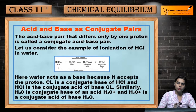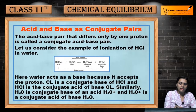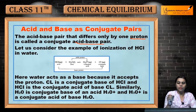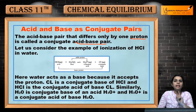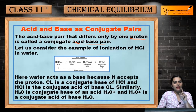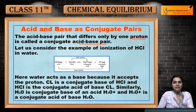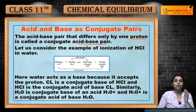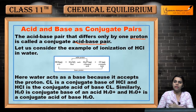The acid-base pair that differs only by one proton is called a conjugate acid-base pair. In any acid-base pair, only one H-positive is donated and accepted. We call that pair a conjugate acid-base pair. We saw that when NH3 accepted a proton, the change of one proton made the difference between acid and base — that is the conjugate base and conjugate acid.